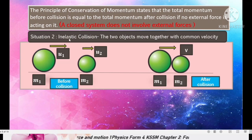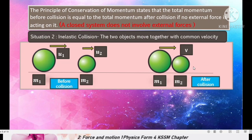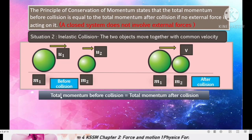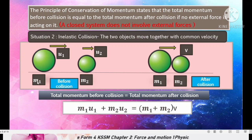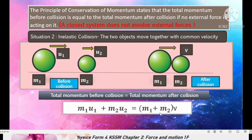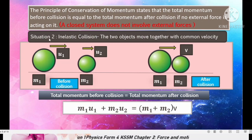Situation 2 is inelastic collision, where two objects move together with a common velocity after collision. Before collision the objects are separate; after collision the two objects stick together and move with common velocity v. Applying conservation of momentum: m1·u1 + m2·u2 = (m1 + m2)·v, since the stuck-together objects form a new combined mass m1 + m2. We use this formula for problems involving inelastic collision.